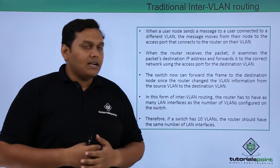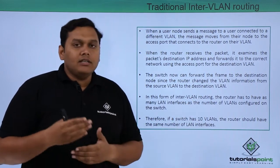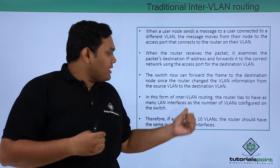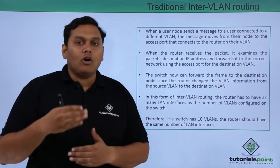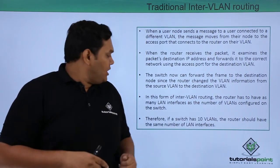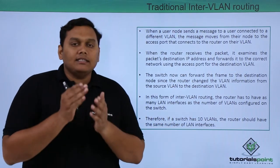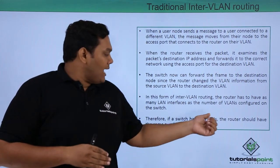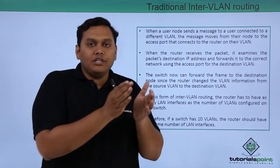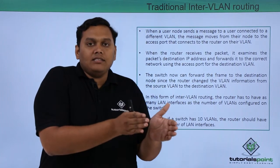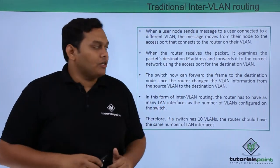In this form of inter-VLAN routing, the router must have information about the LAN interfaces and the number of VLANs configured on the switch. Therefore, if a switch has 10 VLANs, the router also should have the same number of LAN interfaces — the number of VLANs should match the number of interfaces on the router.